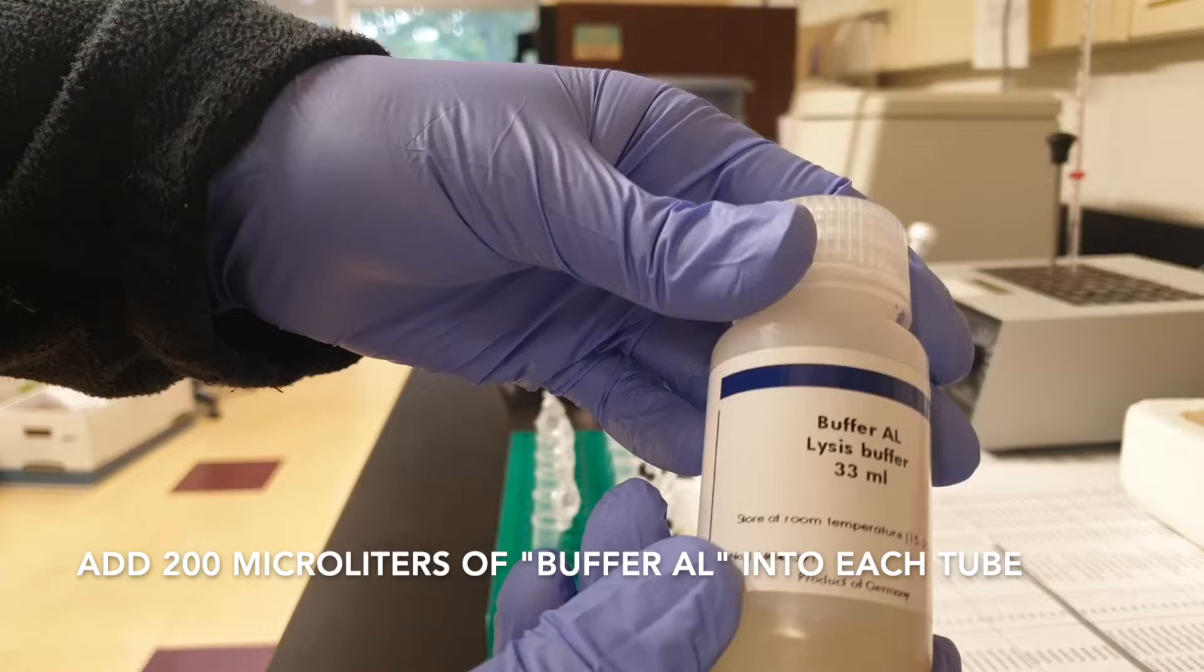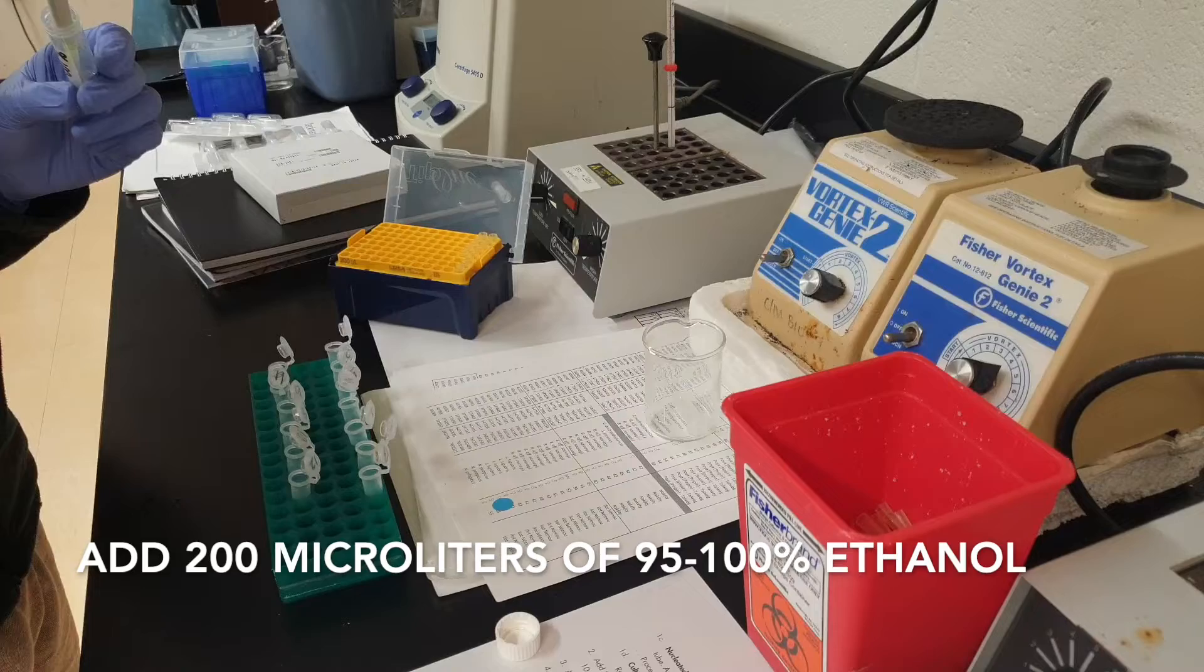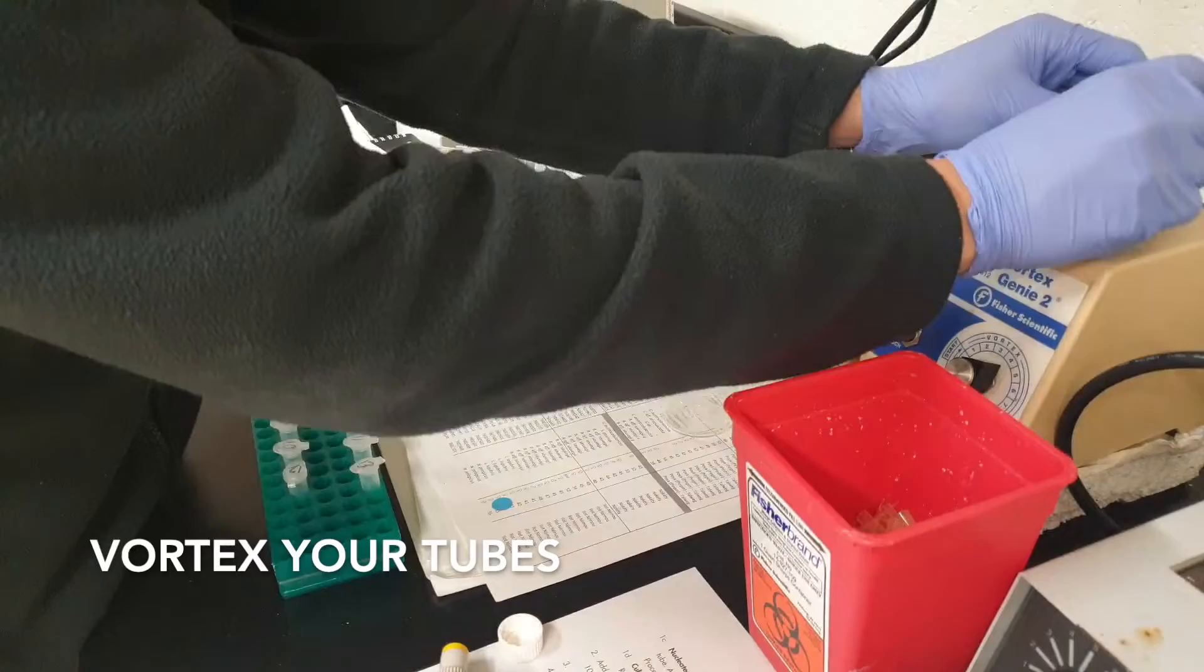Once that's done, add 200 microliters of buffer AL and 200 microliters of pure ethanol. If you don't have pure ethanol, you can use 95% as well. In the end, you're going to have about 600 microliters of solution in your tubes.